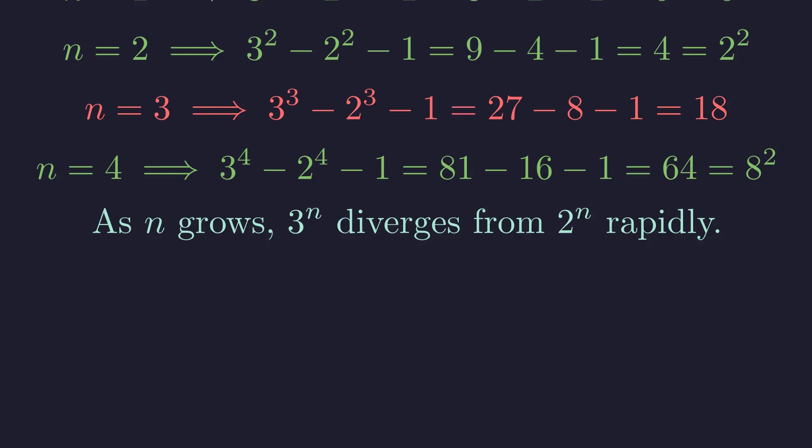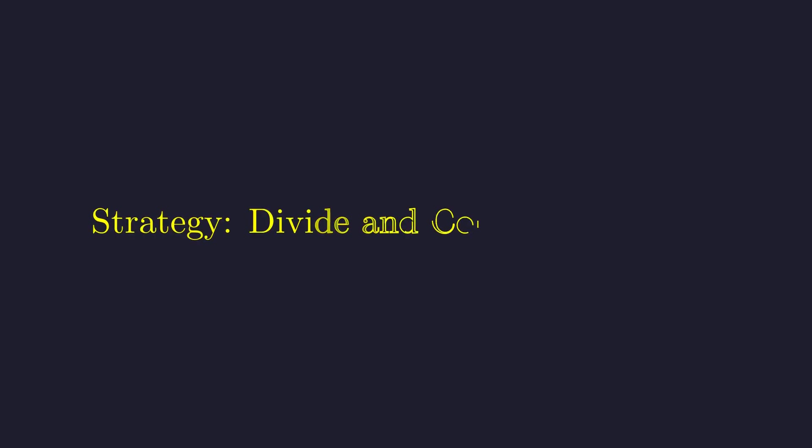Now here's the key insight. As n gets larger, 3 to the n grows much faster than 2 to the n. This means these lucky coincidences where we get perfect squares should become increasingly rare. To turn this intuition into a proof, we'll use a classic strategy: split the problem based on whether n is odd or even.